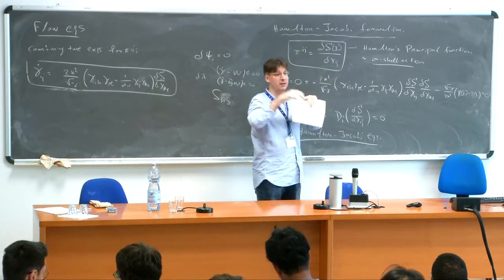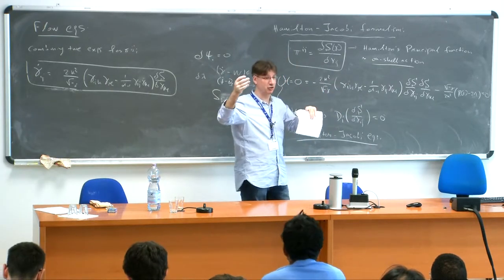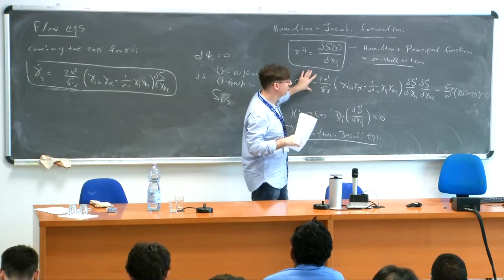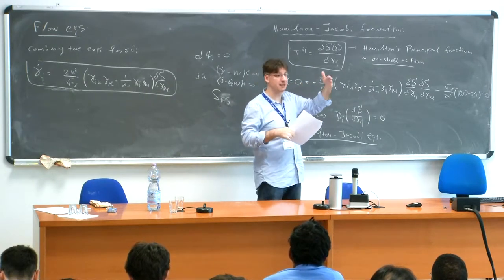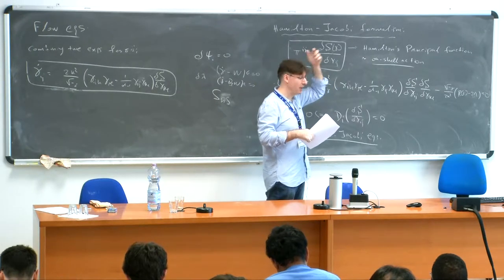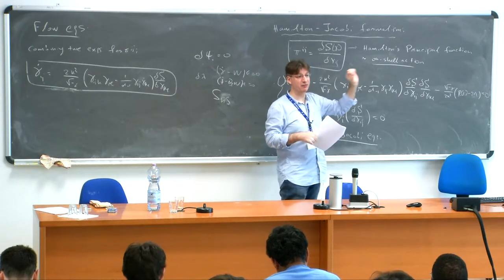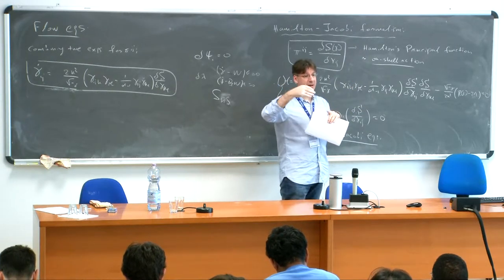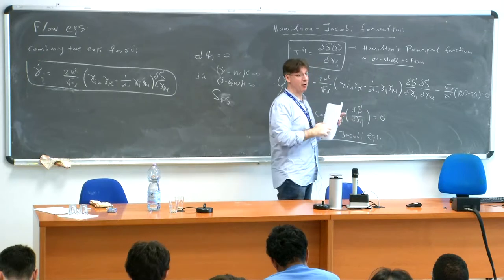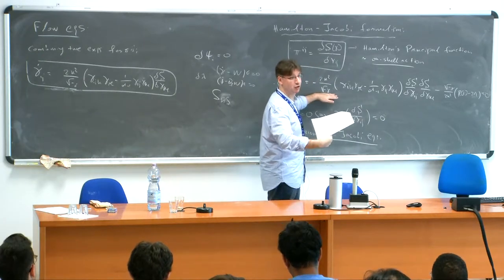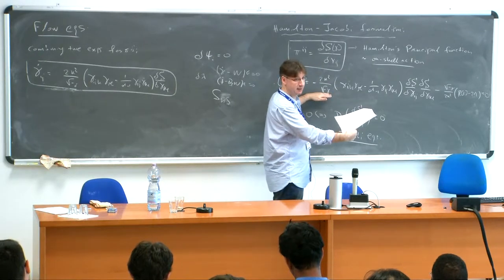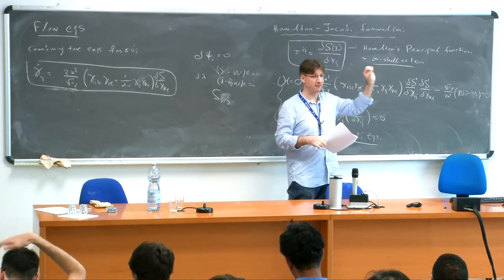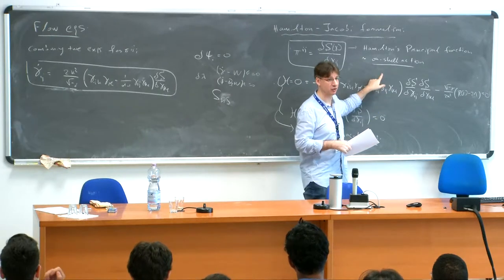The general solution of the Hamilton-Jacobi equation that you need is what is called the principal function, which contains a number of integration constants — not functions. You need as many integration constants as the number of fields. The principal function will contain these integration constants, and for a very specific choice of these integration constants, it will agree with the on-shell action.